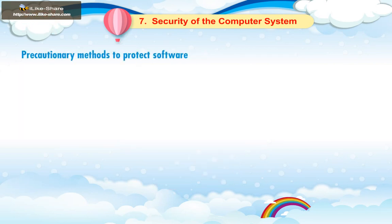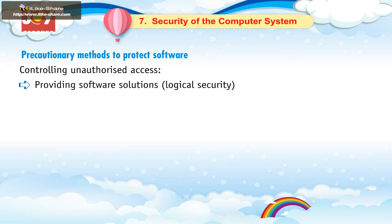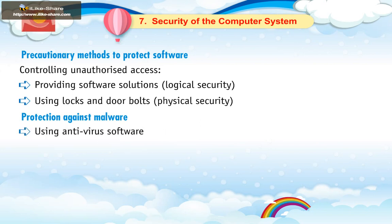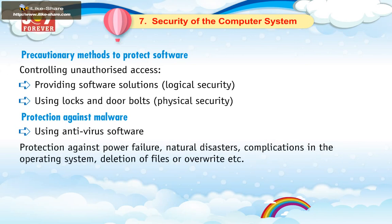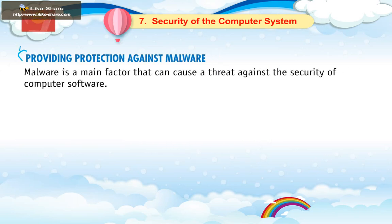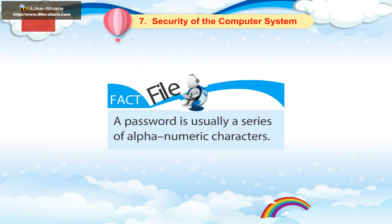Precautionary methods to protect software include: controlling unauthorized access by providing software solutions such as logical security, and using locks and door bolts for physical security. Protection against malware using antivirus software. Protection against power failure, natural disasters, complications in the operating system, and deletion or overwriting of files is achieved by keeping backups. Providing protection against malware is important as malware is a main factor that can cause a threat against the security of computer software.